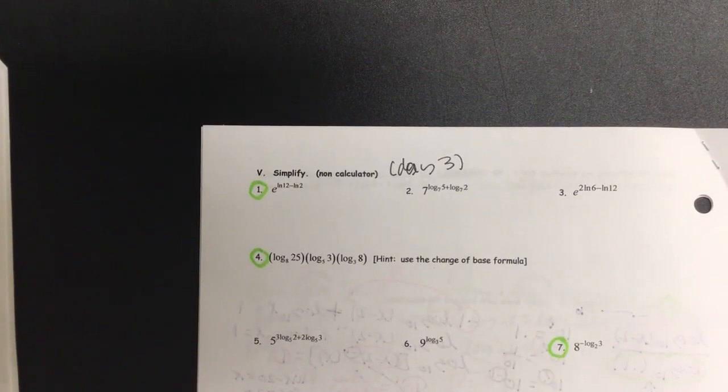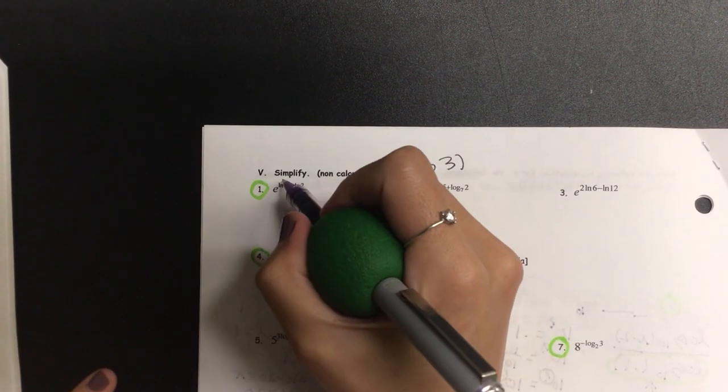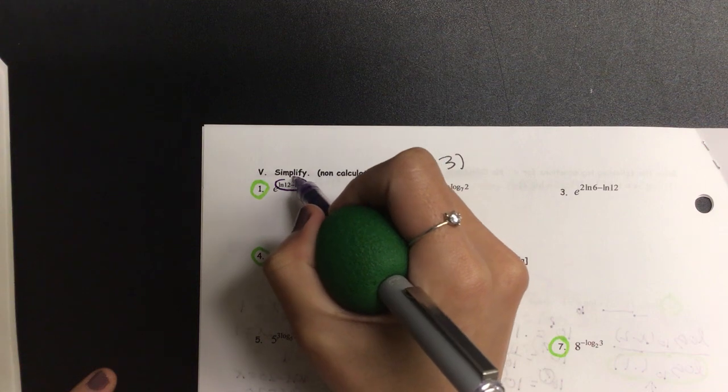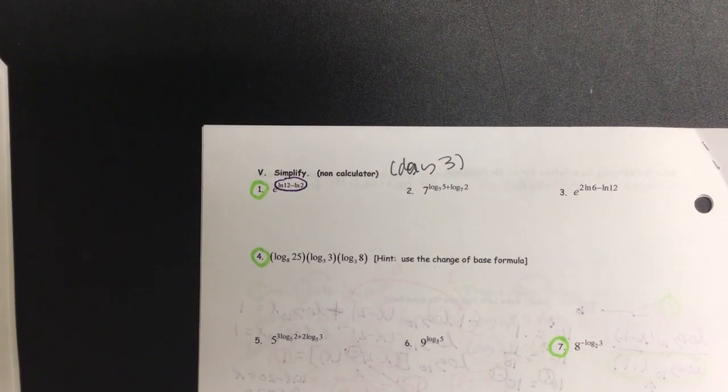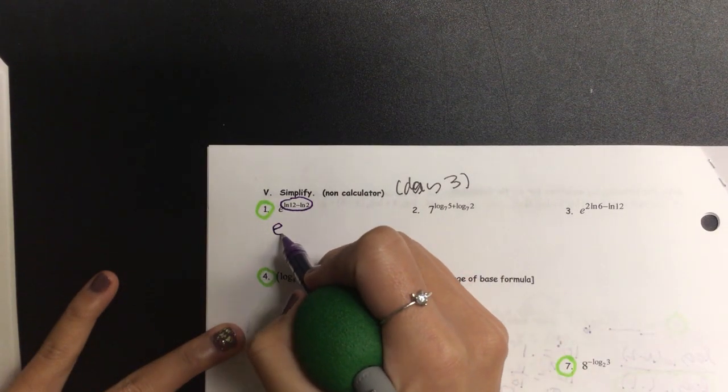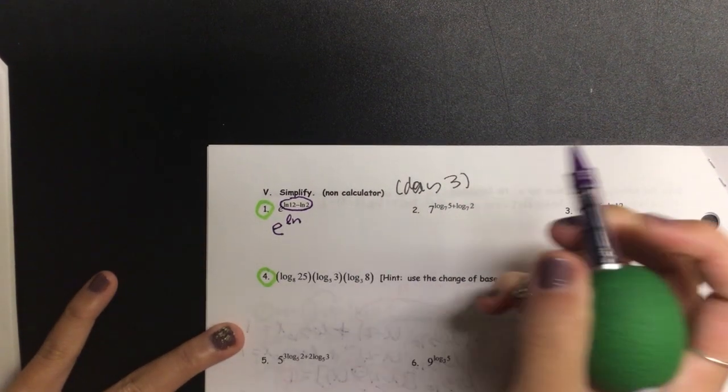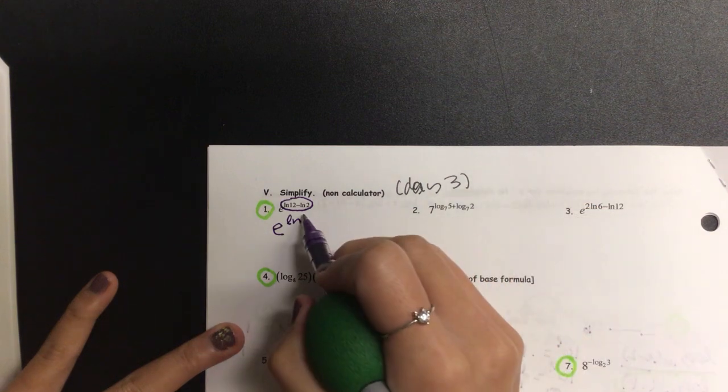Okay, on number one, let's start by condensing the exponent, this right here. So since it is subtracted, what operation do I use to condense it? Division. So we have e to the power of natural log of, what is 12 divided by 2? 6.